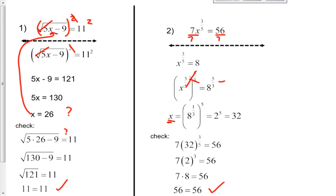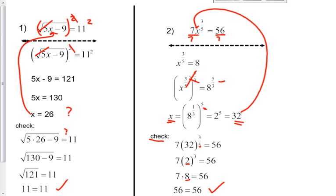8 to the 5 thirds — we split apart the power: 8 to the 1 third is 2, and then 2 to the 5th is 32. So we think our answer is going to be 32. But we're not going to know that until we check. Going back into the original: 7 times 32 to the 3 fifths. 32 to the 1 fifth is 2, then 2 cubed is 8, and 7 times 8 — yes, we get 56 equals 56. So the answer of x equals 32 is correct.